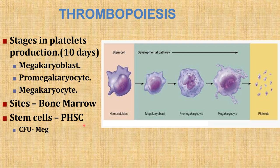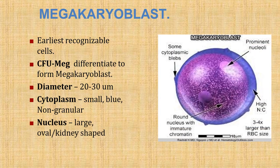Stem cells develop from myeloid stem cells that form CFU-Mega (colony-forming unit megakaryocyte), which in turn develop into megakaryoblasts. The megakaryoblast is the earliest recognizable cell of thrombopoiesis. Its size is 20 to 30 micrometers; the cytoplasm is small, blue, and non-granular; the nucleus is large, oval, or kidney-shaped.